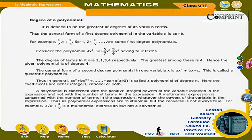Thus, all polynomial expressions are multinomial, but the converse is not always true. For example, 3√x + 4/x is a multinomial expression but not a polynomial.